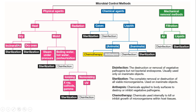As you can see in this chart, some of the dry heat methods can be used for sterilization, and some of the moist heat methods can also be used for sterilization, while other moist heat methods can be used for disinfection. Radiations can also be used for both sterilization and disinfection.